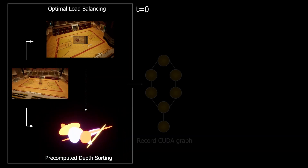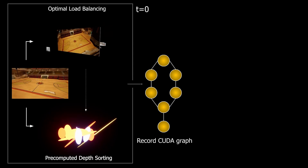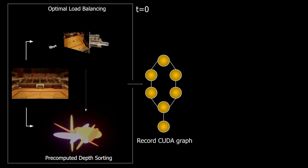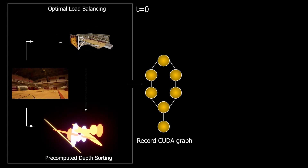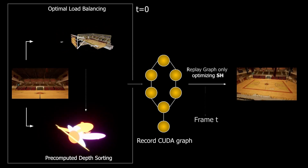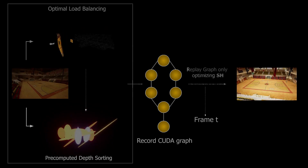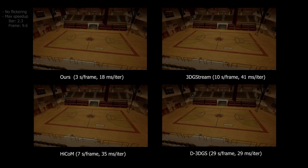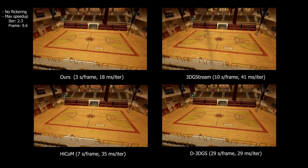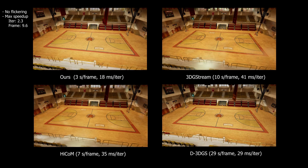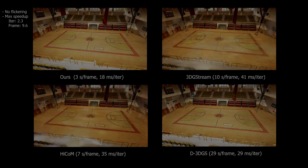At T0, CUDA graphs are recorded for each view, leveraging pre-computed depth sorting and load balancing to minimize CPU overhead and ensure streamlined GPU execution. Compared to baseline, this static optimization approach eliminates flickering artifacts, achieves remarkable speedups, and ensures a stable, high-quality rendering pipeline.